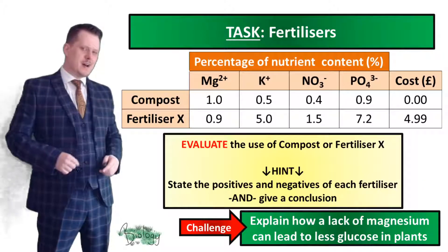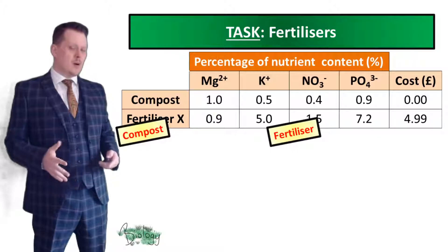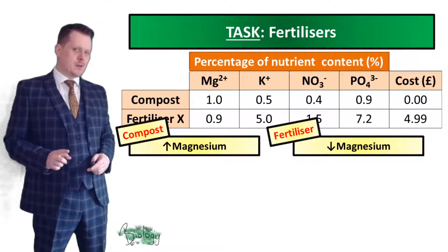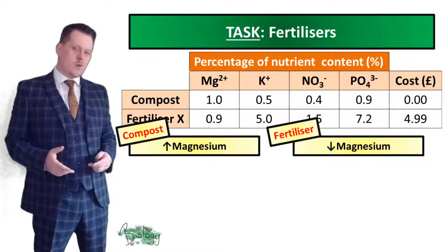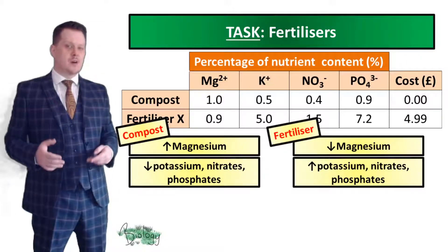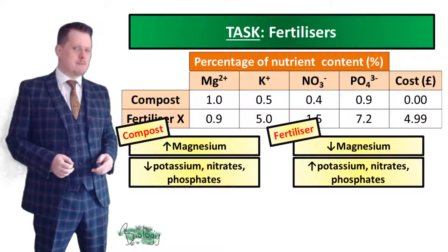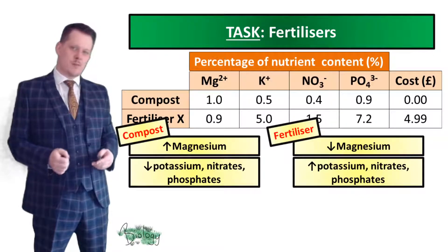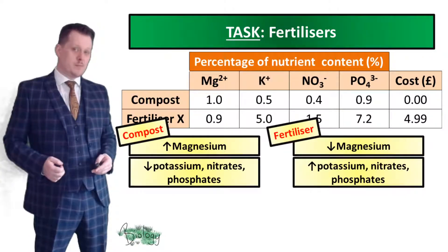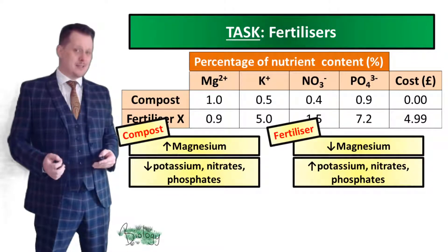Have you evaluated this compost and fertilizer? Let's look at some good and bad points. The compost has more magnesium than the fertilizer — compost contains 1% magnesium while the fertilizer only contains 0.9%. However, the fertilizer contains more potassium, more nitrates, and more phosphates. The fertilizer contains 5% potassium whereas the compost only contains 0.5%. The fertilizer contains 1.6% nitrates whereas the compost only contains 0.4%. And the fertilizer contains 7.2% phosphates whereas the compost only contains 0.9%.